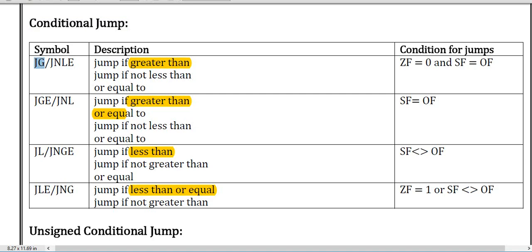For signed conditional jumps: JG is for jump if greater than; JNL is for jump if not less than; JGE is for jump if greater than or equal; JNLE is for jump if not less than or equal; JL is for jump if less than; JNGE is for jump if not greater than or equal; JLE is for jump if less than or equal; JNG is for jump if not greater than. All descriptions are given — you can take a snapshot of this.